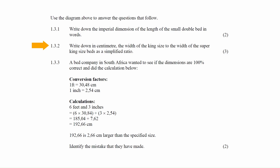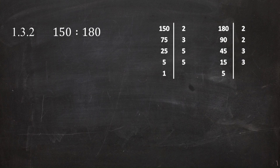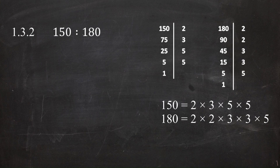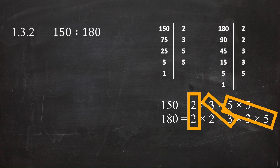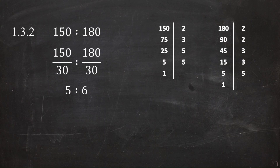In question 1.3.2 you have to write down the width of a king size bed to the width of a super king size bed as a simplified ratio in centimeters. From the diagram, the width of a king size bed is 150 centimeters and the width of a super king size bed is 180 centimeters. This gives a ratio of 150 to 180. Using the ladder method, the highest common factor of 150 and 180 is 30, so dividing both by 30 gives a simplified ratio of 5 to 6.